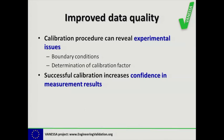Calibration leads to improved data quality, because during a calibration procedure you can reveal experimental issues which you had not thought of when setting up the experiment. This could include boundary conditions that are not properly set, or the determination of a calibration factor that was chosen wrong. Once you have performed a successful calibration, this also increases the confidence you have in your measurement result.